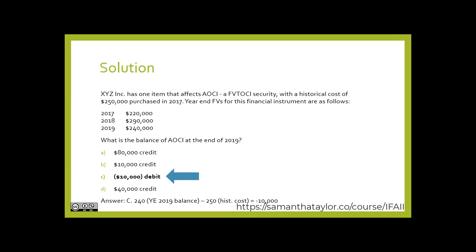If you said a debit balance of $10,000, you would be correct. Because AOCI is a cumulative account, we can simply look to 2019 and see that it is presently worth $240,000, but we paid $250,000. That means it's worth $10,000 less. Throughout the years of fluctuations, that $250,000 would be credited by a net of $10,000, a decrease to the asset by $10,000. That would result in an offsetting debit to AOCI of $10,000. Thank you, and I'll see you in the next video.